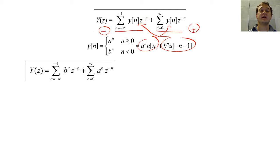To calculate the two-sided Z-transform, let's invert our B-sequence so that it looks like a normal Z-transform.